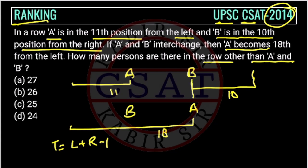This position - we know the left and the right. From this position we can easily find the total number of people. So total number of people will be 18 plus 10 minus 1, so this will be 27.